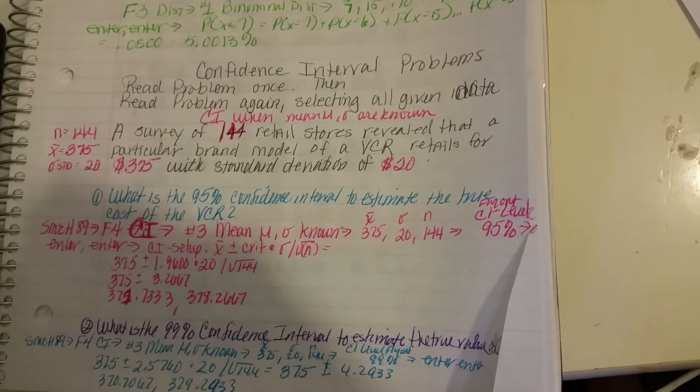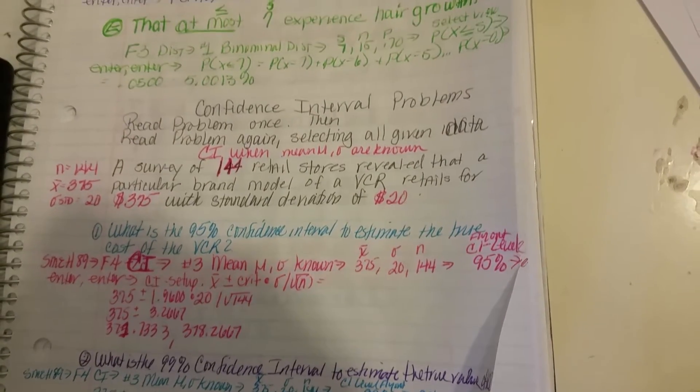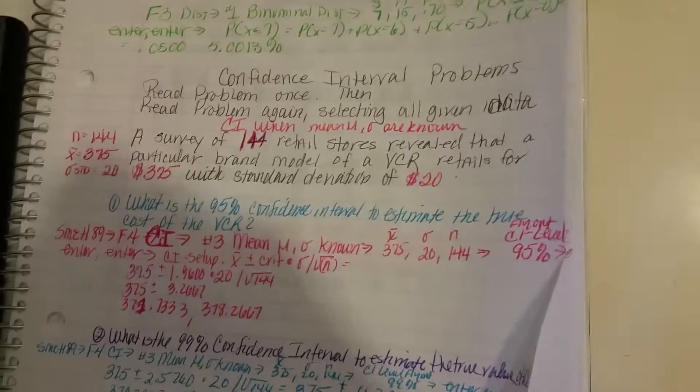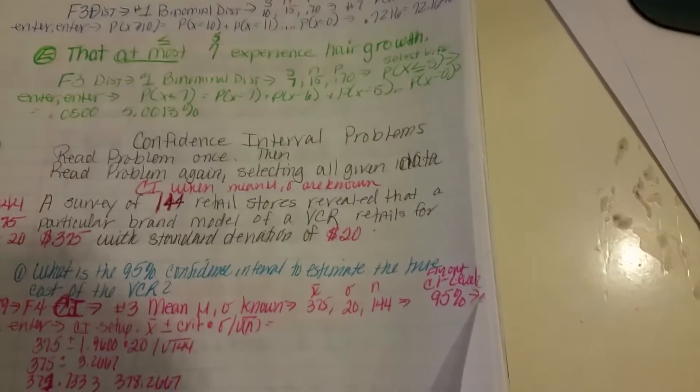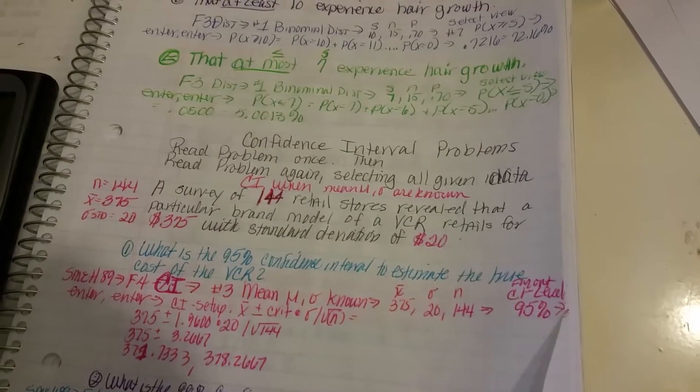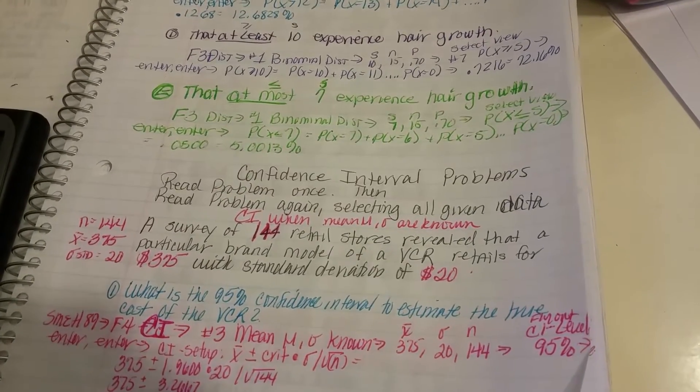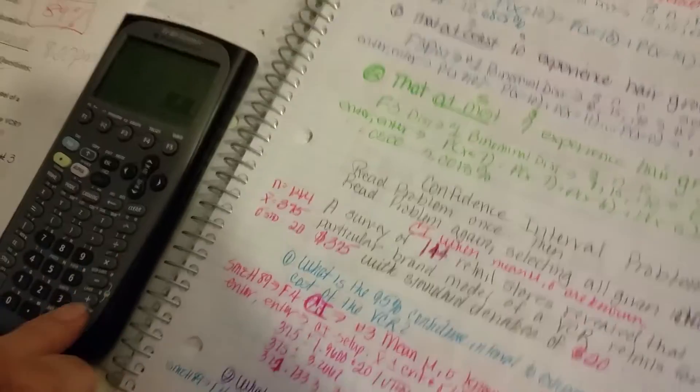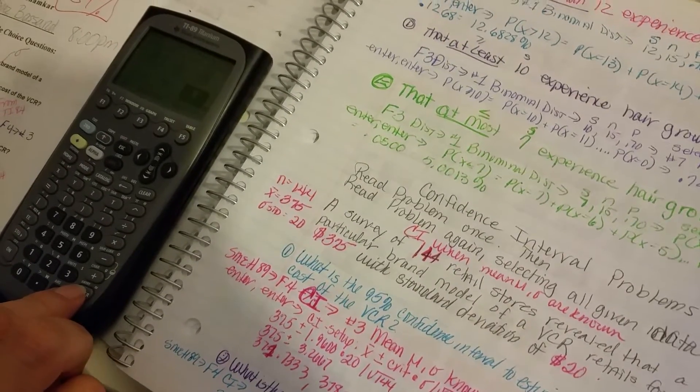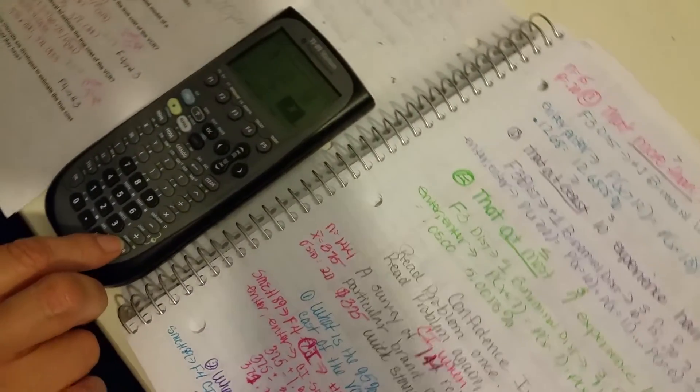First, you read the problem once and then you read the problem again, selecting all given data. And for confidence interval, we're going to turn the calculator on first. We're going to go on the home page and go to Stats and Probability Program that you downloaded into your calculator.